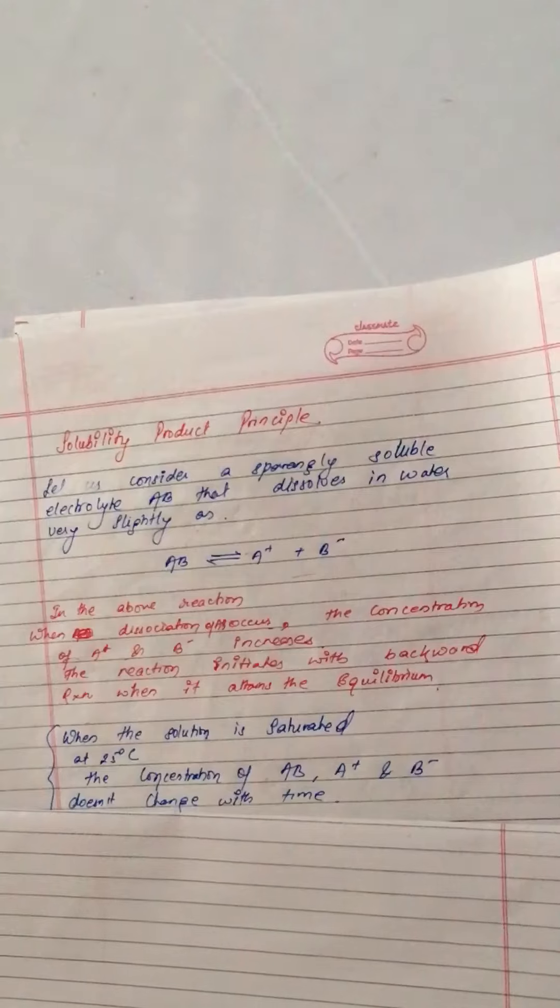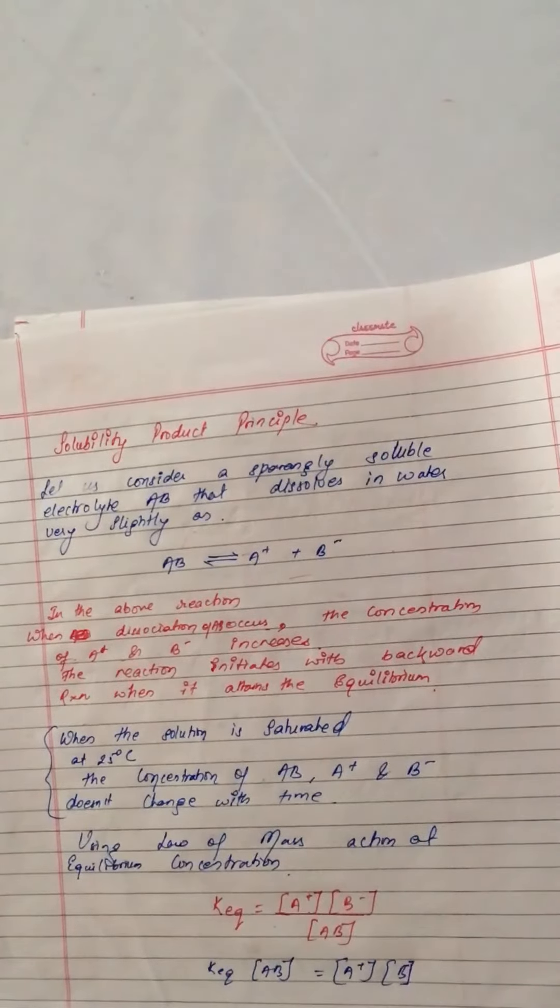When the solution is saturated at 25 degrees Celsius, the concentration of AB, A+, and B- does not change with time.